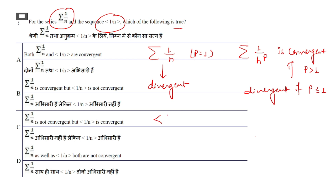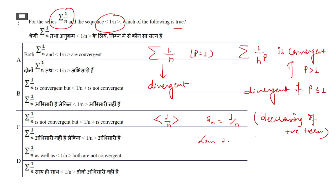Now checking the sequence: aₙ = 1/n is a decreasing sequence with positive terms. Any decreasing sequence of positive terms will converge, and we know that limit of 1/n as n→∞ is 0. So the sequence converges, but the series is divergent. The correct option is C.